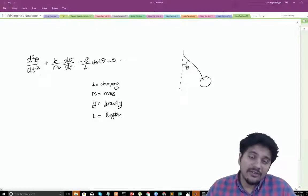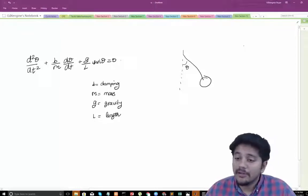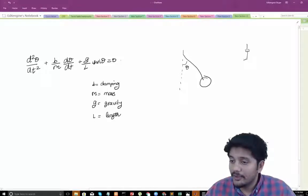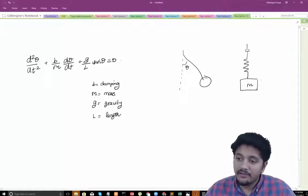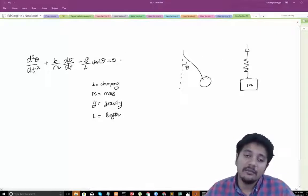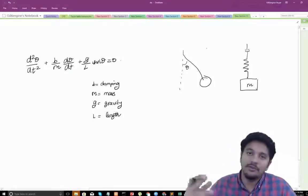In addition to this the same pendulum also describes the motion of a spring, mass and damper system. If I have a damper like this, a spring like this and a mass like this, and if I give this mass initial condition then the same ODE can be used to describe how that mass is going to move.